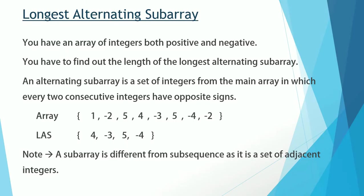The problem provides you an array of integers that contains both positive and negative integers — it is not an array of only positive integers. The ask is to find out the length of the longest alternating subarray. An alternating subarray is a set of integers from the main array in which every two consecutive integers have opposite signs.